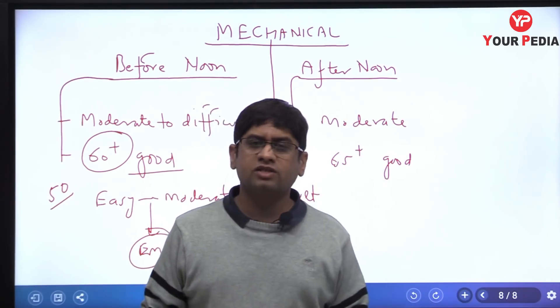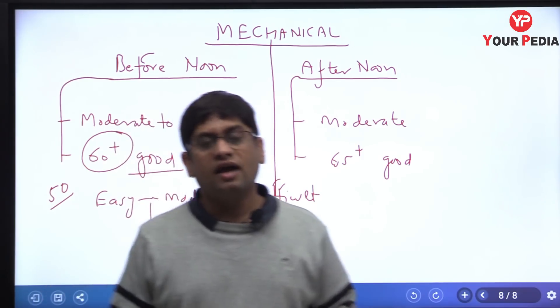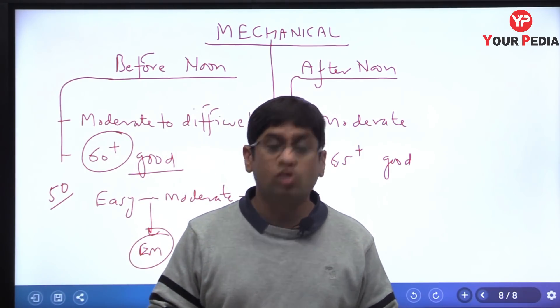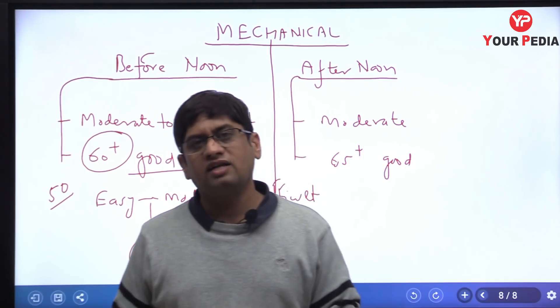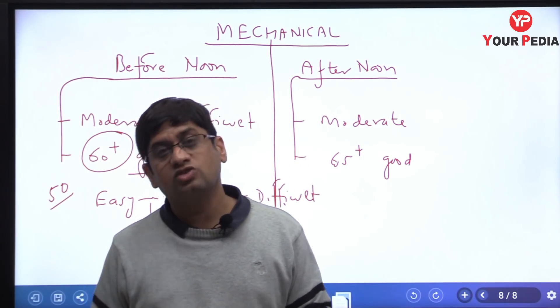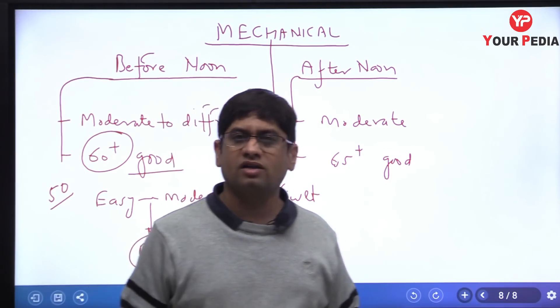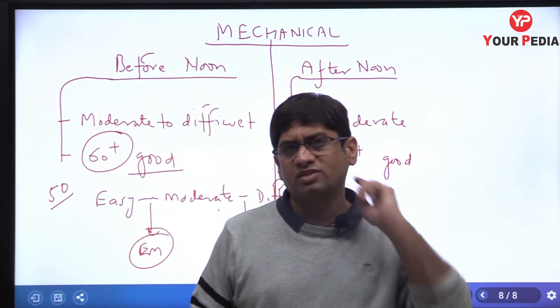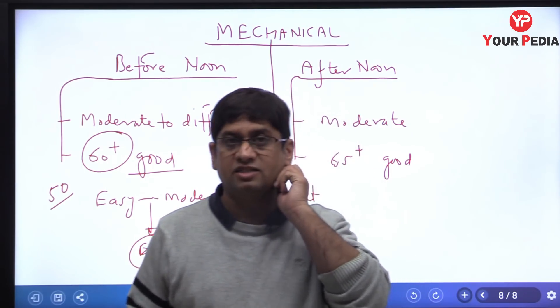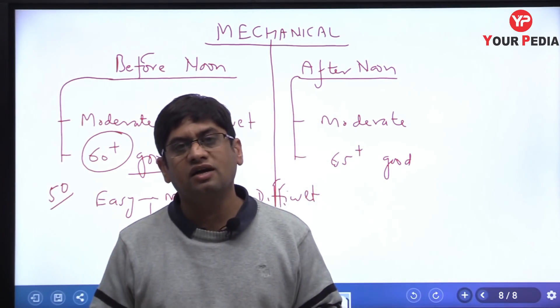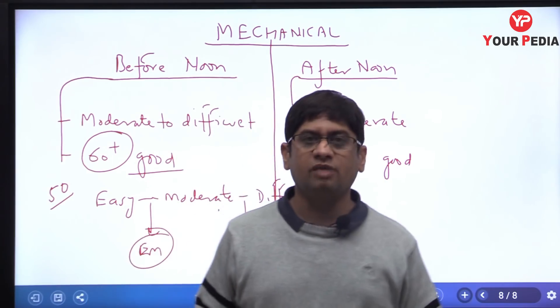And that is supposed to be good score for general category. And in my opinion, 60 plus pe aapke rank bhi acchi ayegi. And you can really get a good platform. Good platform in the form of masters somewhere, IITs maybe, or you may call the PSUs, Maha Ratna PSUs, or State PSU, irrespective of your BTech percentage. BTech percentage is a different criteria. 80 plus is very good.